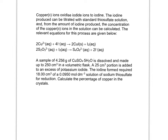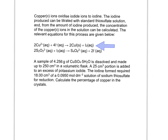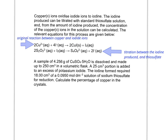Copper 2 ions oxidize iodide ions to iodine — that's your first equation. The iodine produced is then titrated with a standard thiosulfate solution, and from the amount of iodine produced the concentration of the copper 2 ions can be calculated. The actual titration is the second reaction. You react the copper with iodide; the copper turns the iodide into iodine, making copper iodide in this case. That iodine produced is then titrated with thiosulfate.